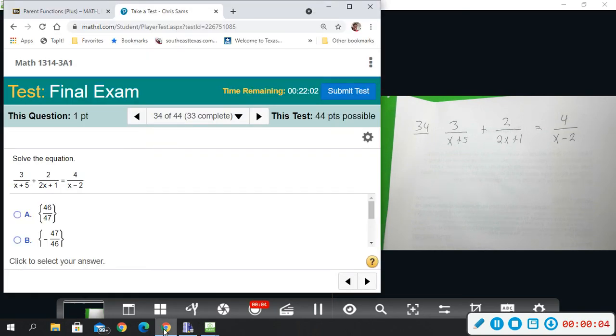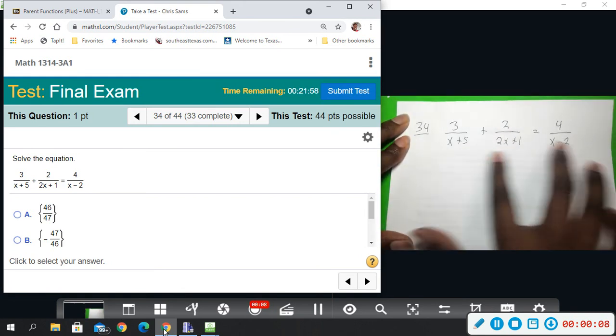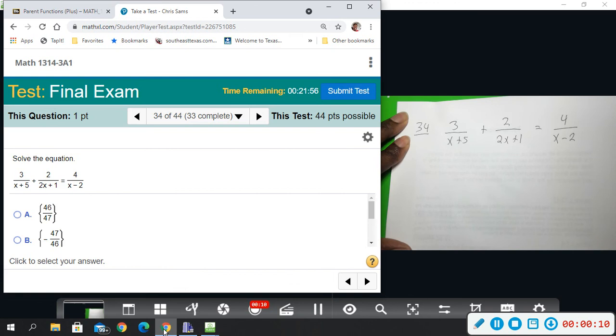Alright, so number 34. I've taken the liberty of writing down the equation. What I'm going to do to get rid of these fractions is I'm going to multiply by all the denominators.